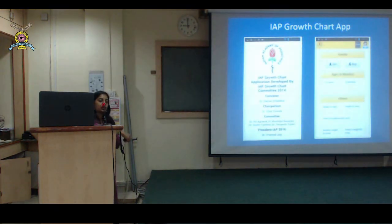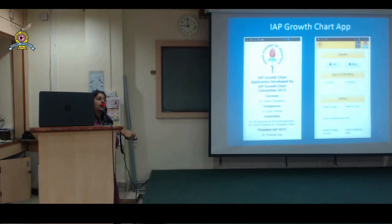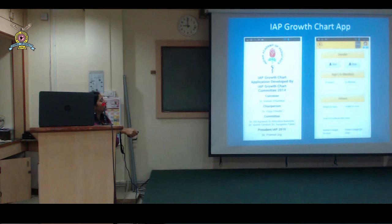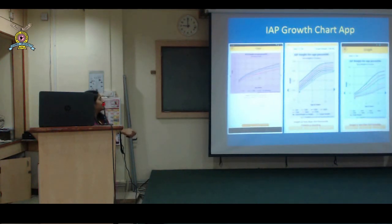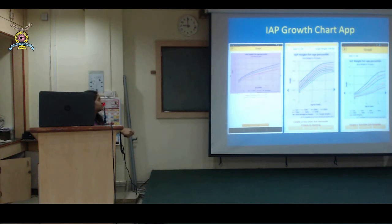Once you install the app, you enter details: whether the child is a girl or a boy, age in exact years and months (very important since everything is age-dependent), weight, height, head circumference, mother's height, and father's height. You then get graphs: if your child is less than 5 years, you get WHO charts; above 5 years, you get IAP charts. Everything comes ready-made, plotted automatically, with interpretation given - for example, height less than the 1st centile, Z-score minus 3, the patient is severely stunted.